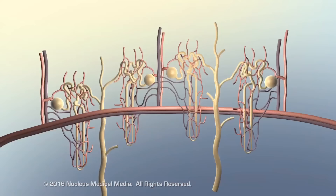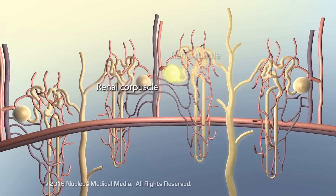The functional unit of the kidney is the nephron, composed of the renal corpuscle and the renal tubule.